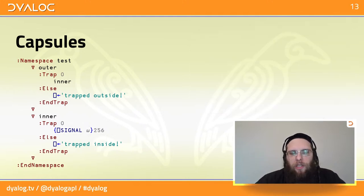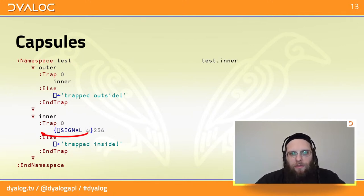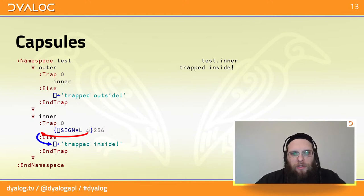Let's try it. We call the function inner. QuadSignal takes the 256, which is the value of omega, and leaves its capsule — the dfn. This allows the colon trap in the function inner to take effect. Execution continues with the handling — 'trapped inside' — the message being printed, which is what we wanted.